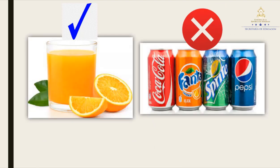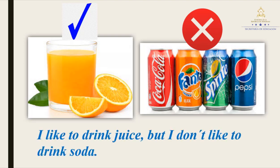Tell me, what can you observe in the first picture? Juice. And in the second one? Soda, that's right. So we are going to create a sentence using both words — juice and soda. Think about it. Now tell me your sentence. I like to drink juice, but I don't like to drink soda. That's good, that is the correct sentence. I like to drink juice, but I don't like to drink soda. Repeat after me: I like to drink juice, but I don't like to drink soda.